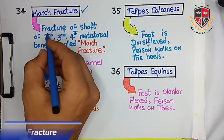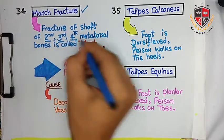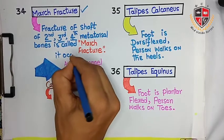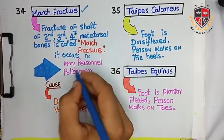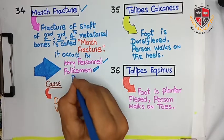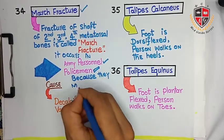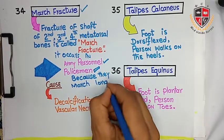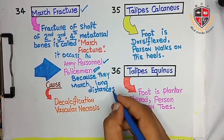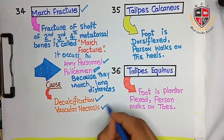The next clinical is march fracture. In this condition, there is a fracture of the shaft of the second, third, or fourth metatarsal bones. It is called march fracture because it occurs in army personnel and policemen who march very long distances. The cause of march fracture may be decalcification or avascular necrosis.